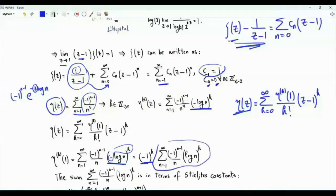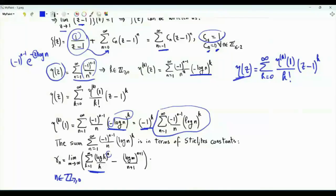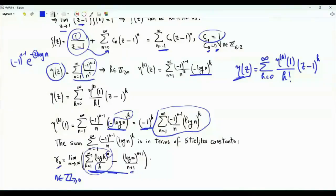We now study this summation using Stieltjes constants. Gamma n, where n is a non-negative integer, is the limit of the summation k from 1 to m of log k to the n divided by k, minus log m to the n plus 1 over n plus 1. It can be shown that this limit exists and is given by the constant gamma n.